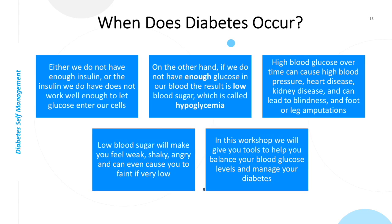Diabetes occurs when either we do not have enough insulin, or the insulin we do have does not work well enough to let glucose enter our cells. In both of these cases, glucose stays in our blood, resulting in high blood glucose, or blood sugar. On the other hand, if we do not have enough glucose in our blood, the result is low blood sugar, which is called hypoglycemia.